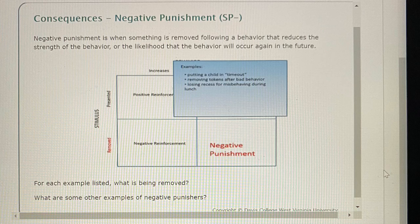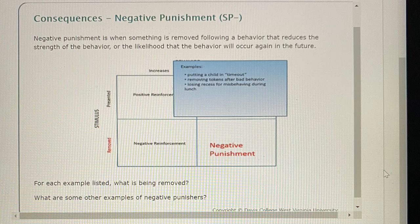Consequences — Negative Punishment (SP-): Negative punishment is when something is removed following a behavior that reduces the strength of the behavior, or the likelihood that the behavior will occur again in the future. For each example listed, what is being removed? What are some other examples of negative punishers? Examples include: putting a child in timeout, removing tokens after bad behavior, and losing recess for misbehaving during lunch.